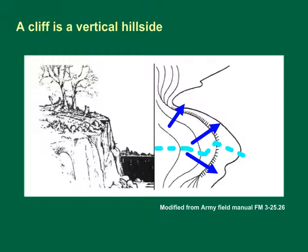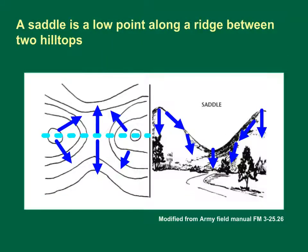A saddle is a dip or low point between two areas of higher ground. The saddle is shown in map view on the left and landscape view on the right. If you stand in a saddle, you have high ground in two opposite directions and lower ground in the other two directions. The contour lines on a map representing a saddle are shaped like an hourglass. Saddles are watershed divides, but the dividing line can be ambiguous in the seat of the saddle.